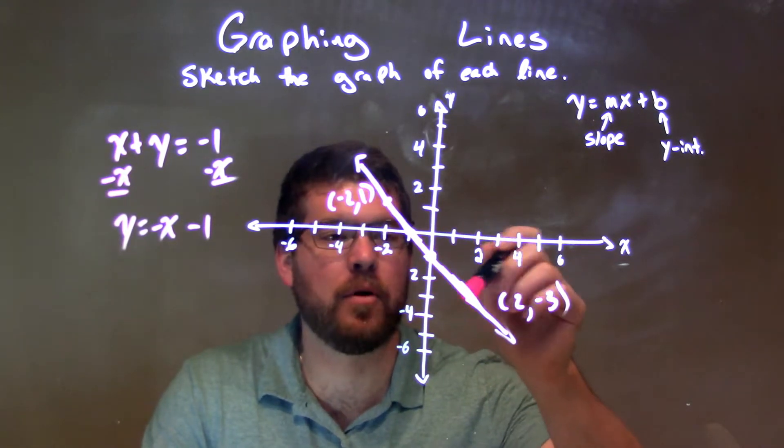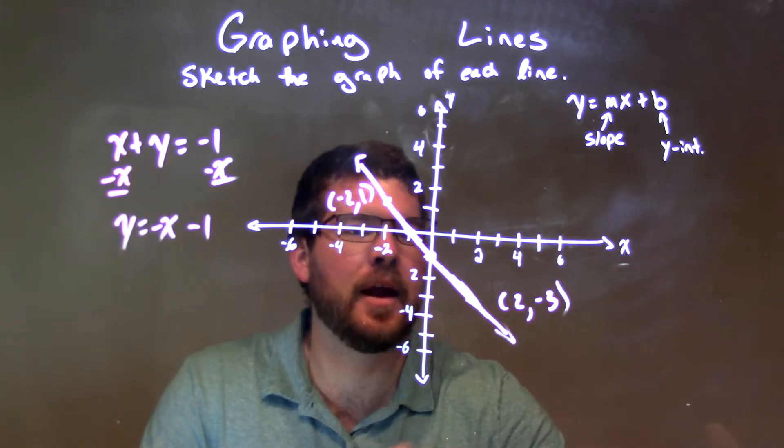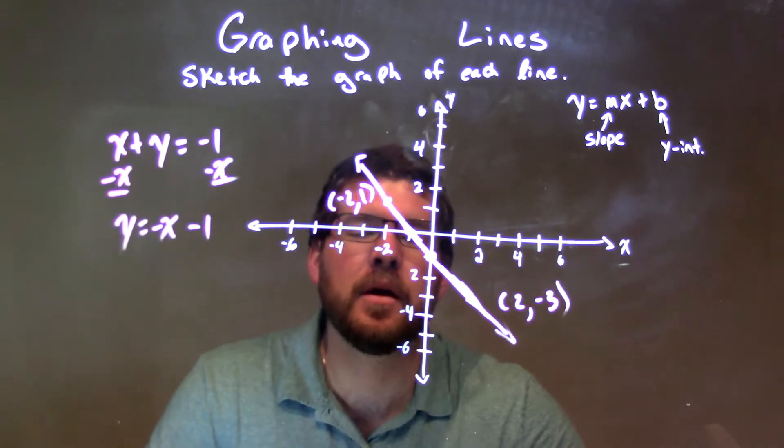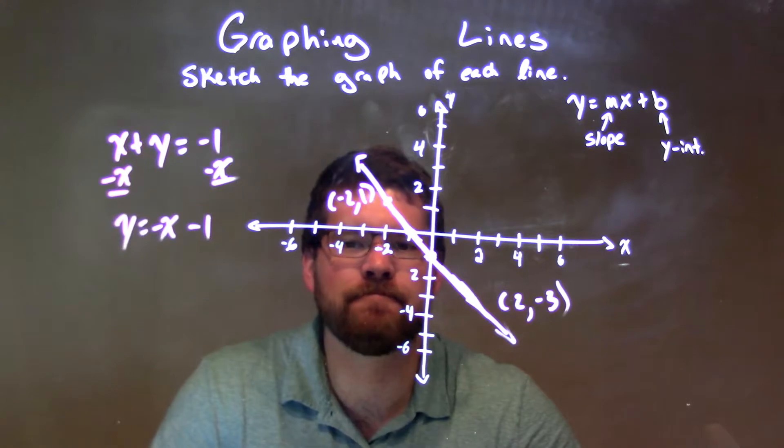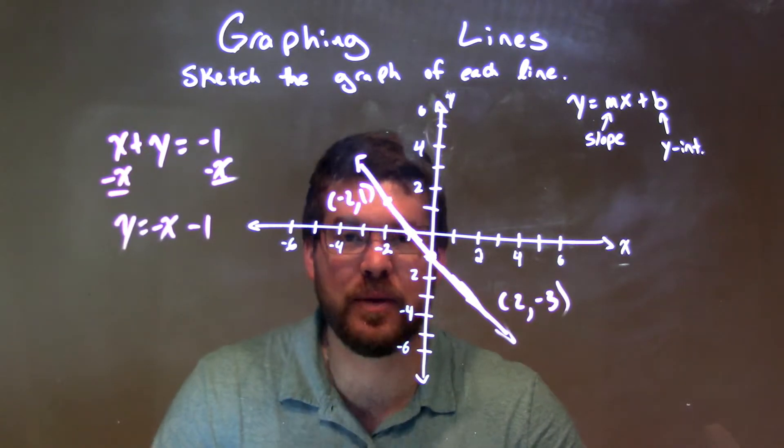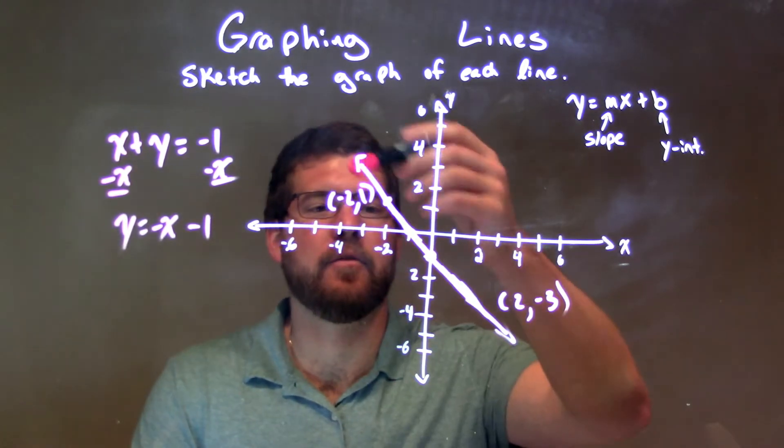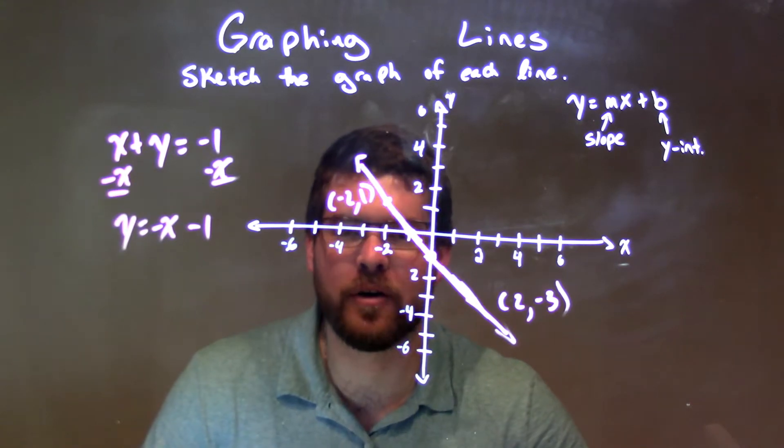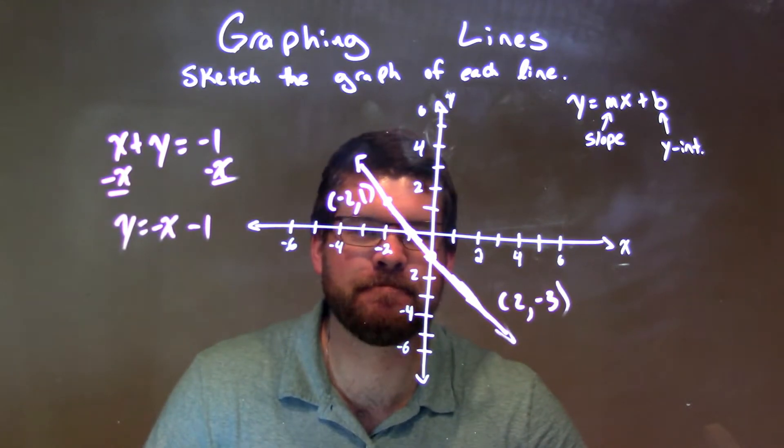So, we go down 1 over 1, down 1 over 1, down 1 over 1. And let's give you some of the points on the line. From there, we have our answer. We connect the dots, and we have a line. So, here we have our final answer, our graph, our line. That's it.